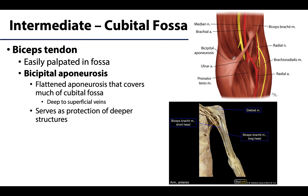The biceps tendon also sends a flattened band of tendon called an aponeurosis — more specifically referred to as the bicipital aponeurosis — which spans most of the cubital fossa just deep to the superficial veins. In this illustration it has been reduced slightly to show the deeper structures.